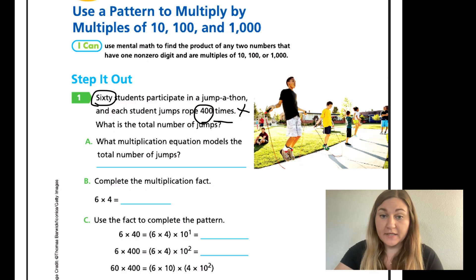What is the question actually asking the third time? What is the total number of jumps? Each student is doing 400 times. I need to know the total number of jumps for all 60 students.